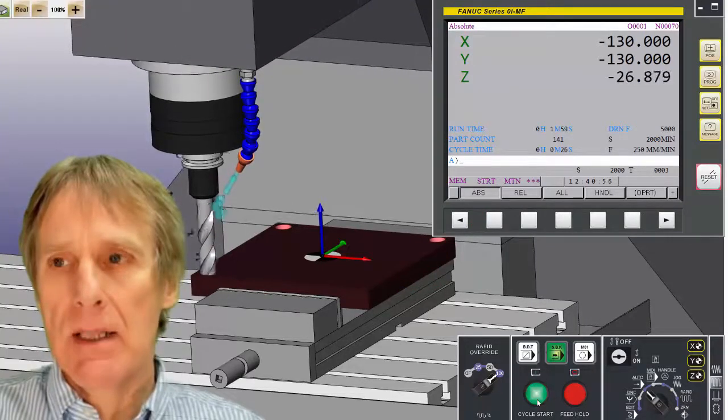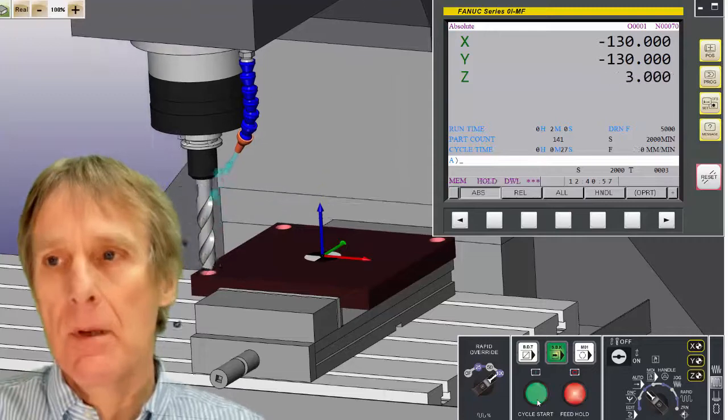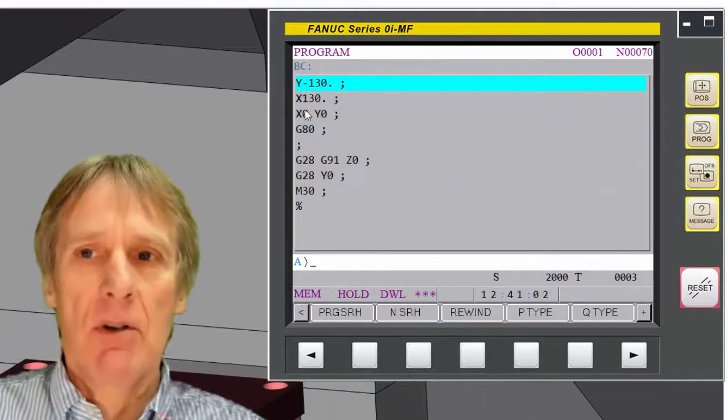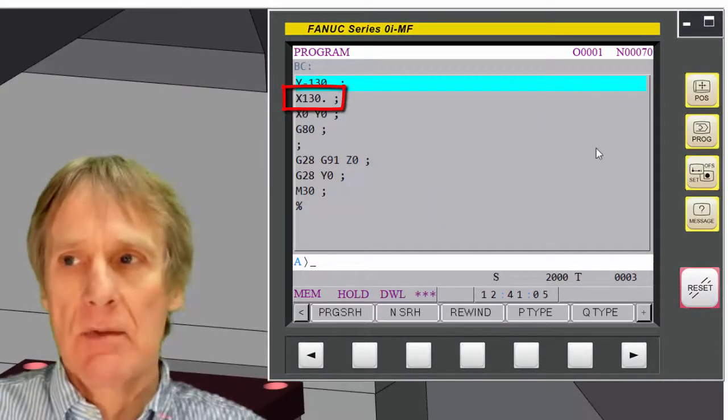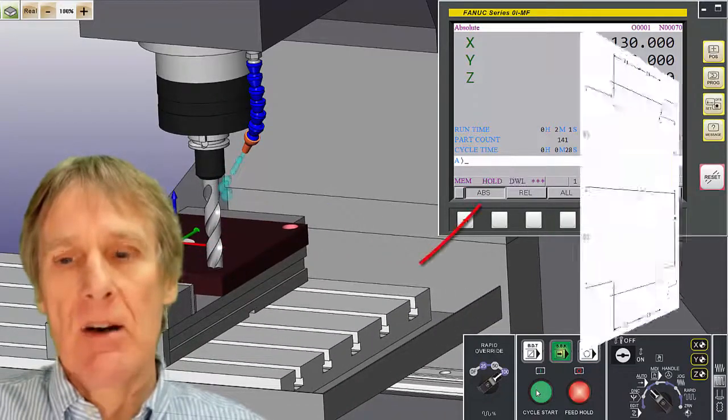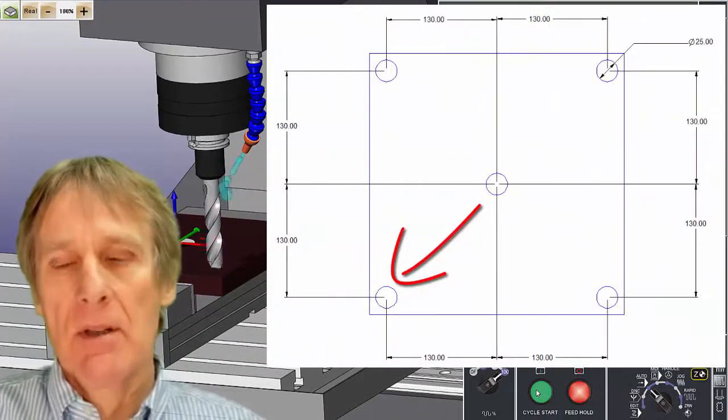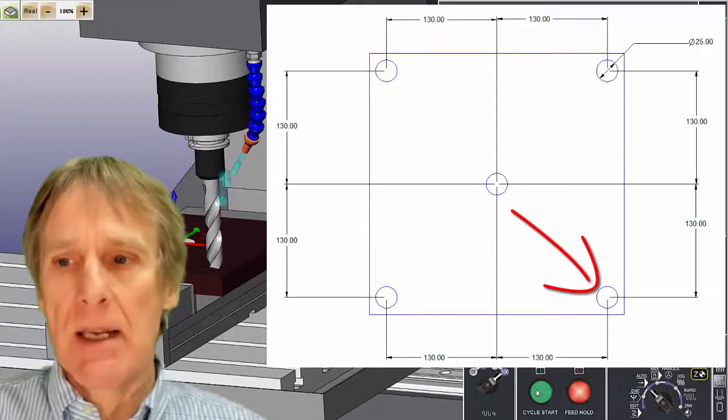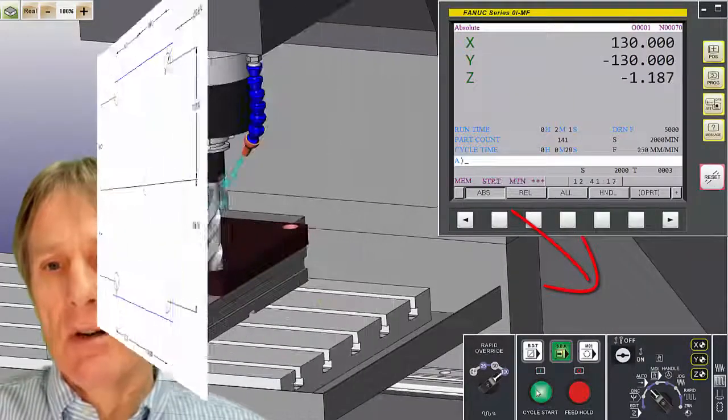And I'll come out of that hole, and then if I look at my program, I'm going to now send it to X plus 130. So if I look on my position display again, you'll see—and again, I didn't program the Y because I don't want the Y to move, so I don't need to repeat it. And then I can just drill a hole there.